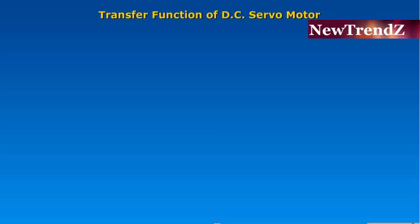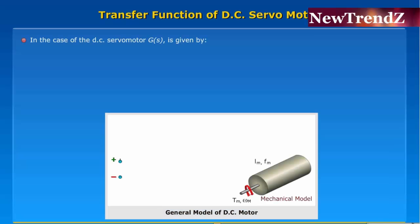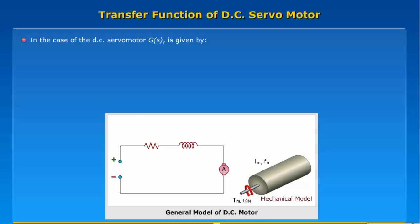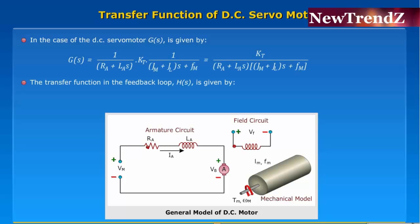Transfer function of DC servo motor. In the case of the DC servo motor, G(s) is given by the transfer function in the feedback loop, H(s) is given by H(s) is equal to Ke.